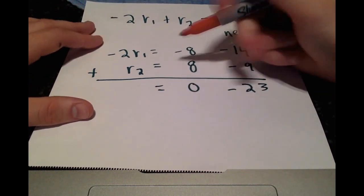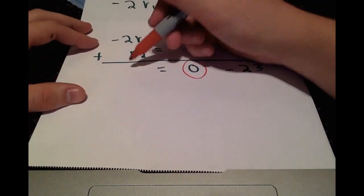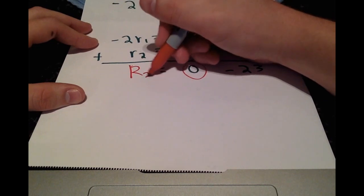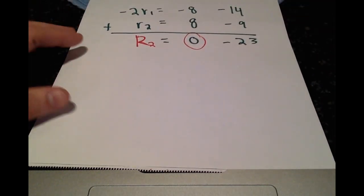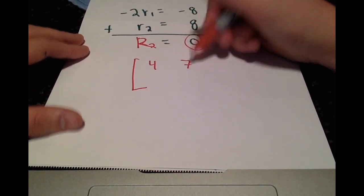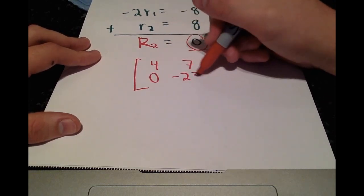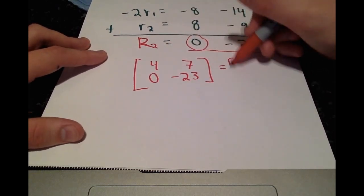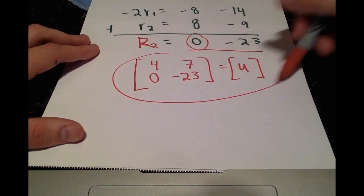So that 0 is exactly what we wanted. So substituting our new row 2 back into our matrix, we have 4 7, which is unchanged, and then 0 negative 23, which is equal to U. Okay. So we found U.